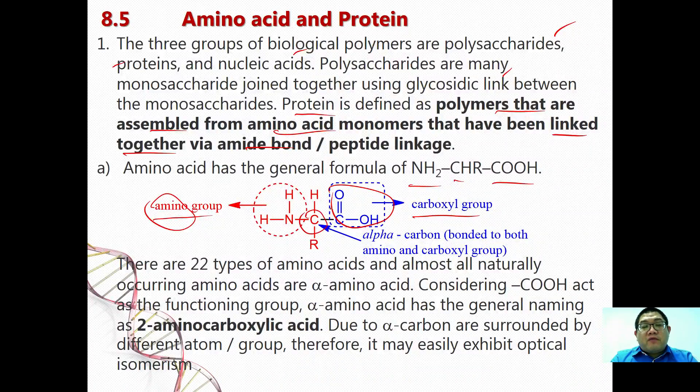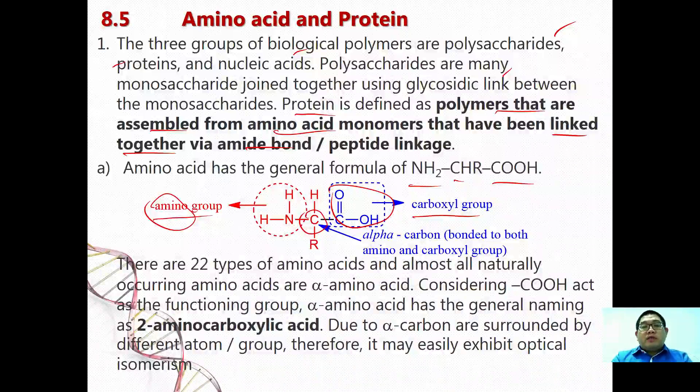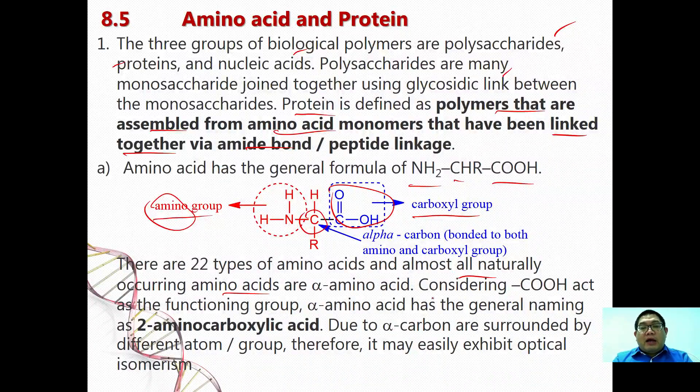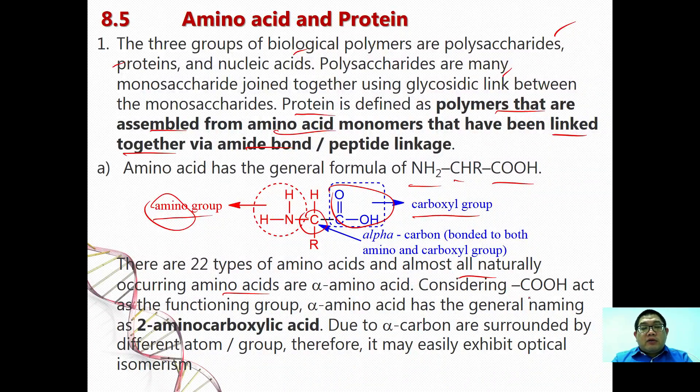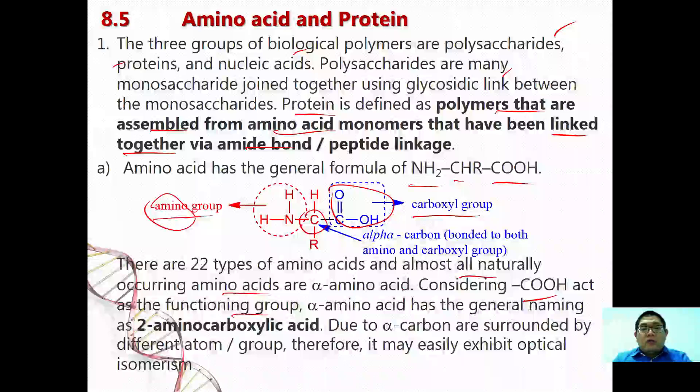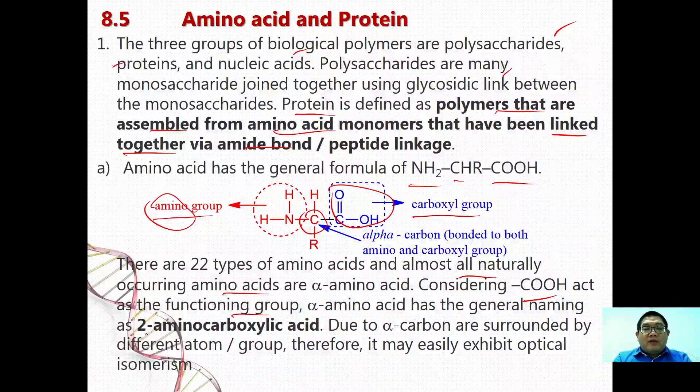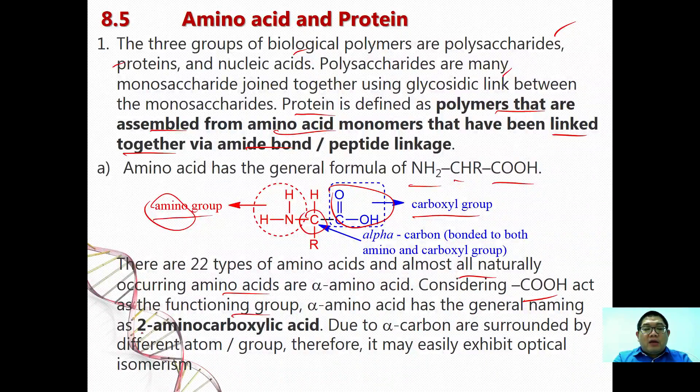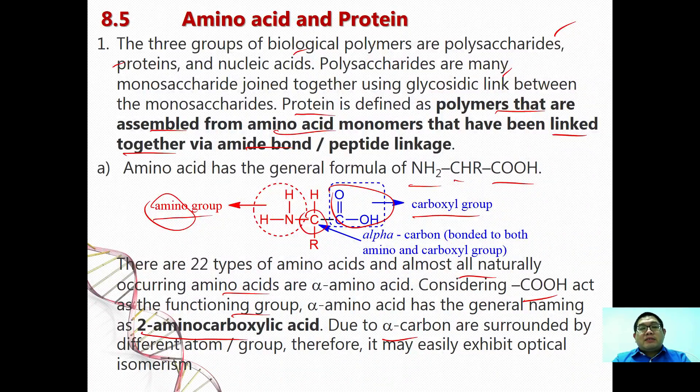So therefore we call this carbon as an alpha carbon. There are 22 types of amino acid that are almost all natural occurring amino acid, alpha amino acid. Considering the COOH act as a functioning group, so alpha amino acids generally have the naming of 2-aminocarboxylic acid. Due to the alpha carbon are surrounded by different atoms or groups, therefore it can easily exhibit optical isomerism.